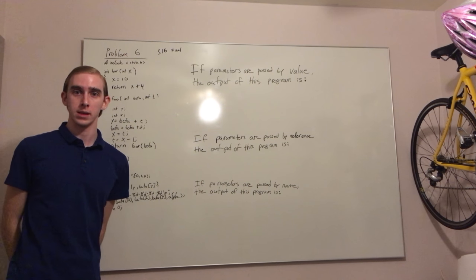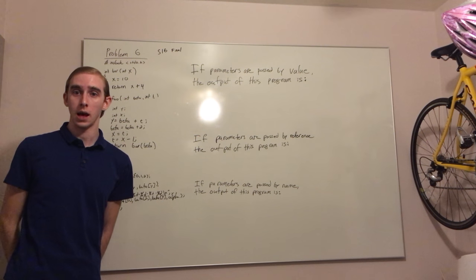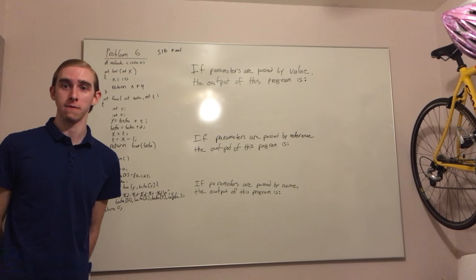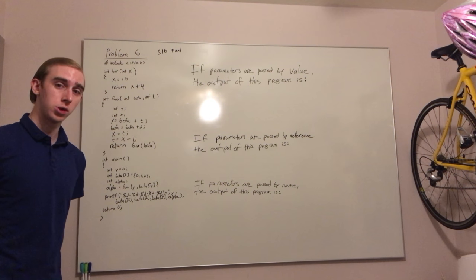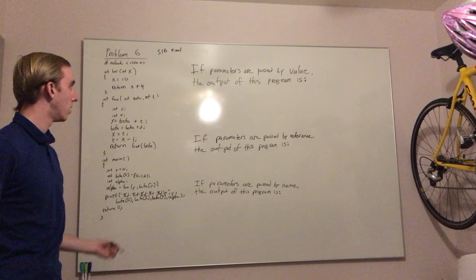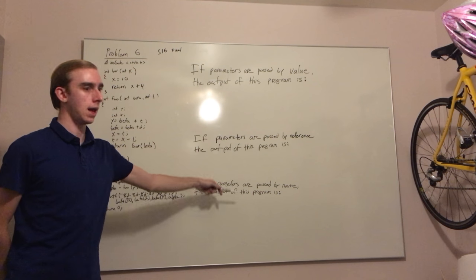Hello, my name is Benjamin Clayton, and I am one of the UTTAs for CAC 3040. I will be covering question 6 from the spring 2016 final. In this question, we are asked to find the output of this program when parameters are passed by either value, reference, or name.